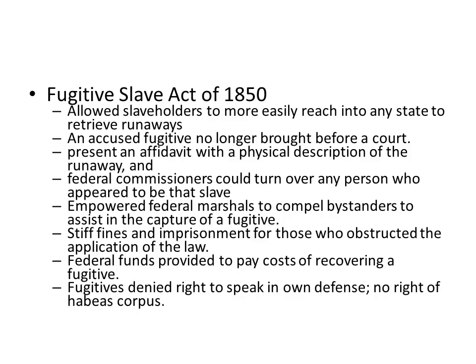One of the things that happened as part of the Compromise of 1850 was the strengthening of the Fugitive Slave Act, and that allowed slaveholders to more easily reach into any state to retrieve runaway slaves. An accused fugitive no longer needed to be brought before a court. All that was necessary was to present an affidavit with a physical description of the runaway, and federal commissioners could turn over any person who appeared to be that individual.